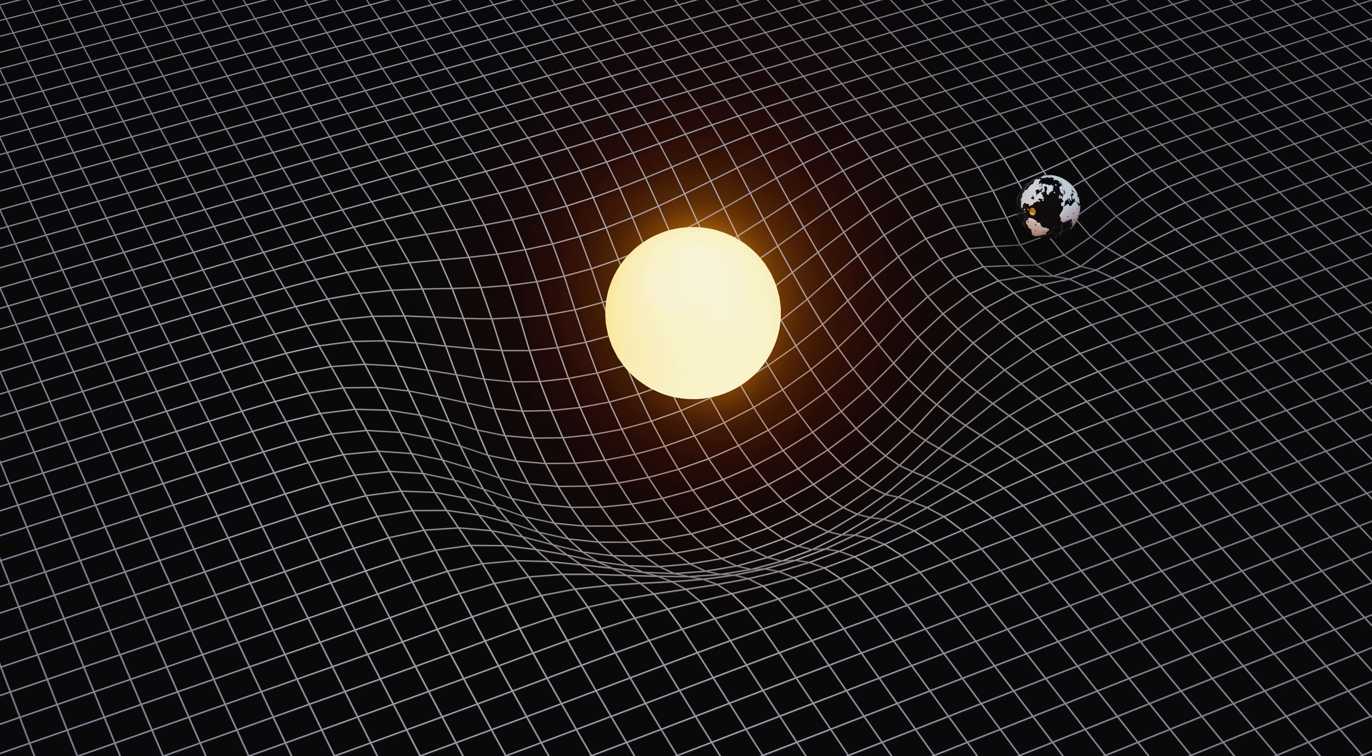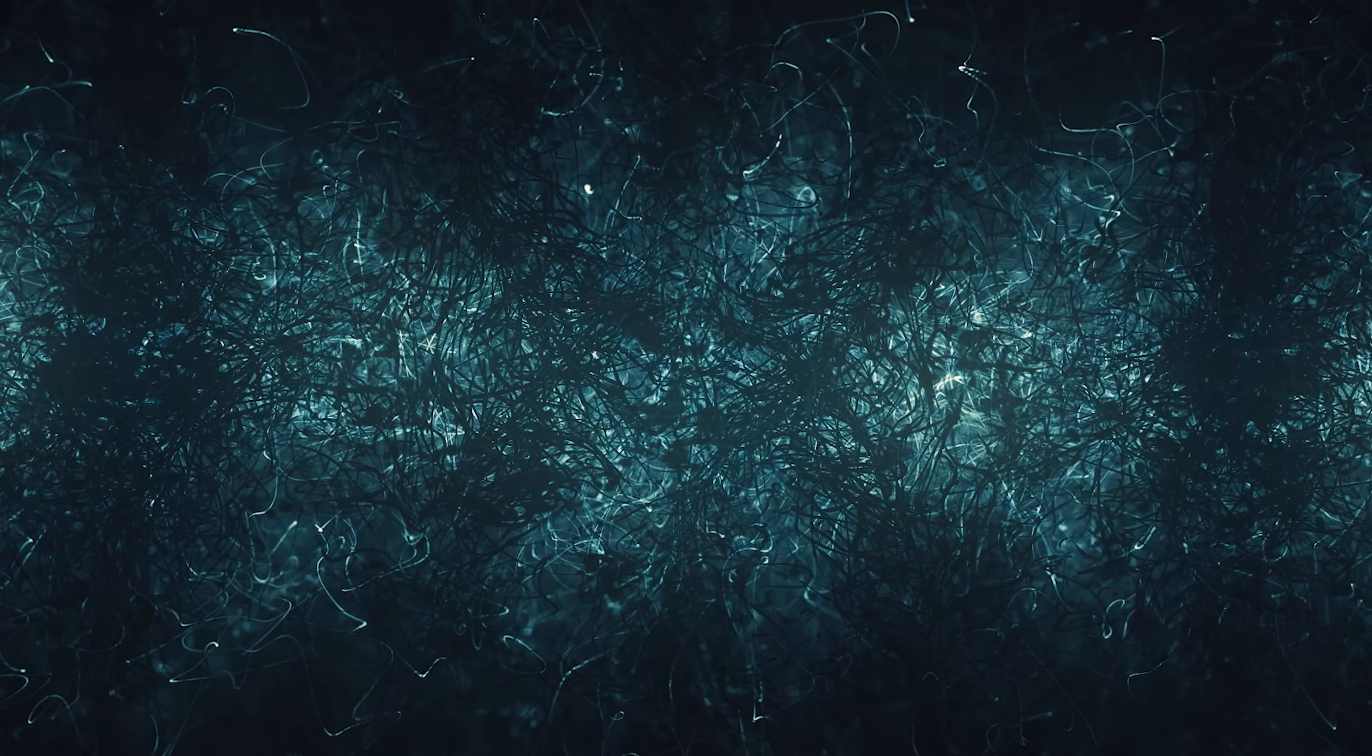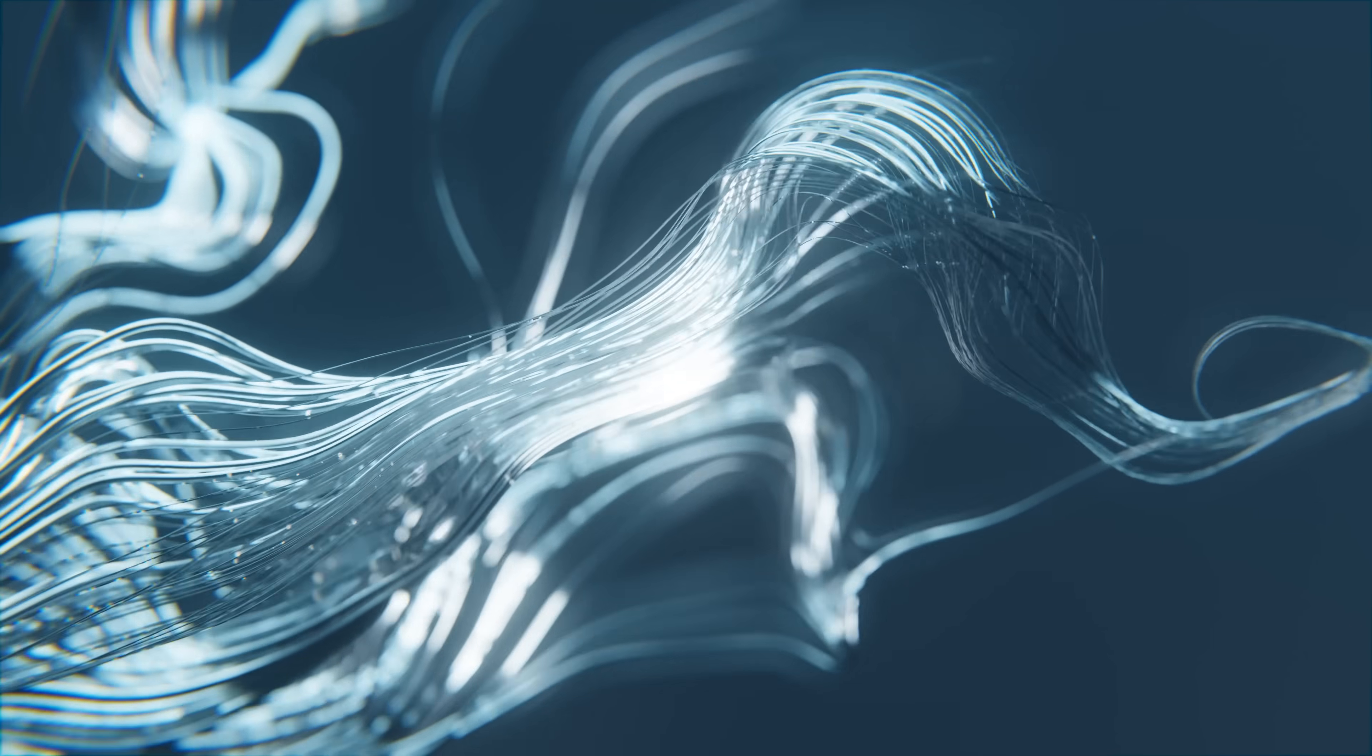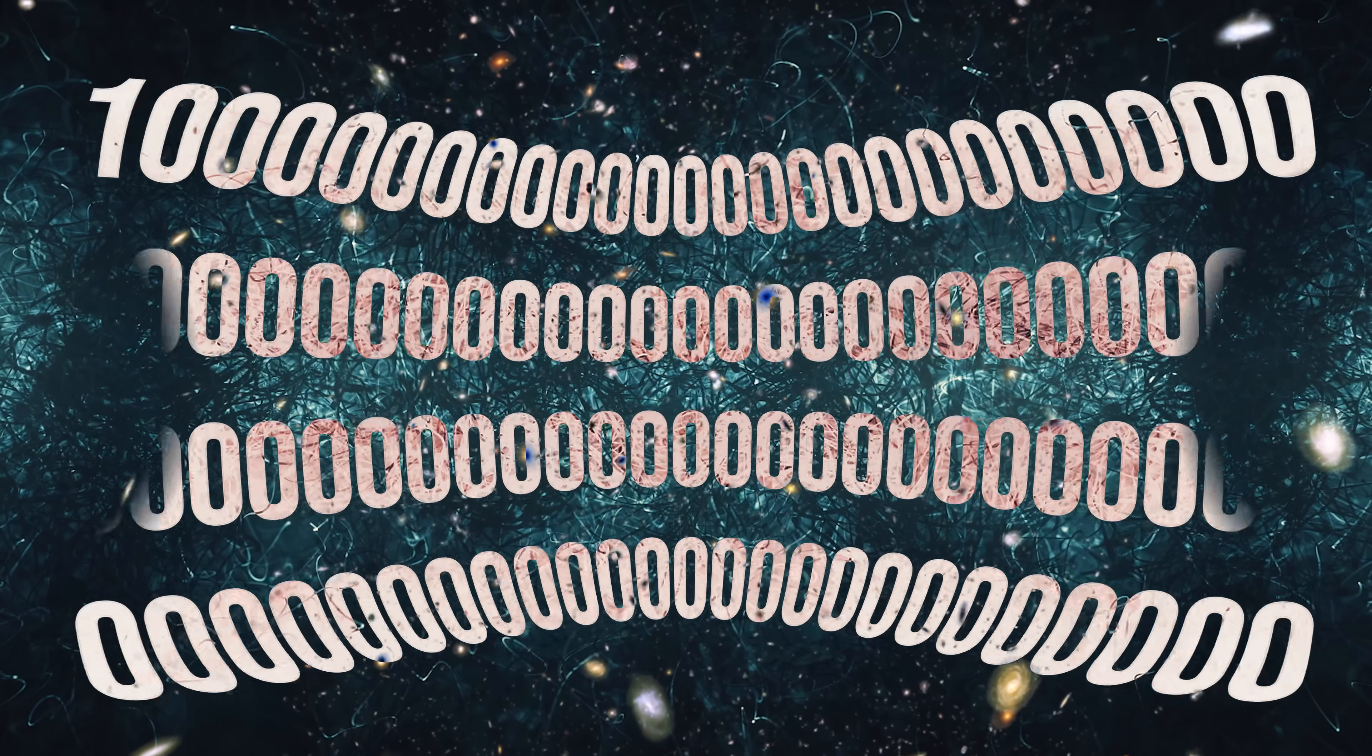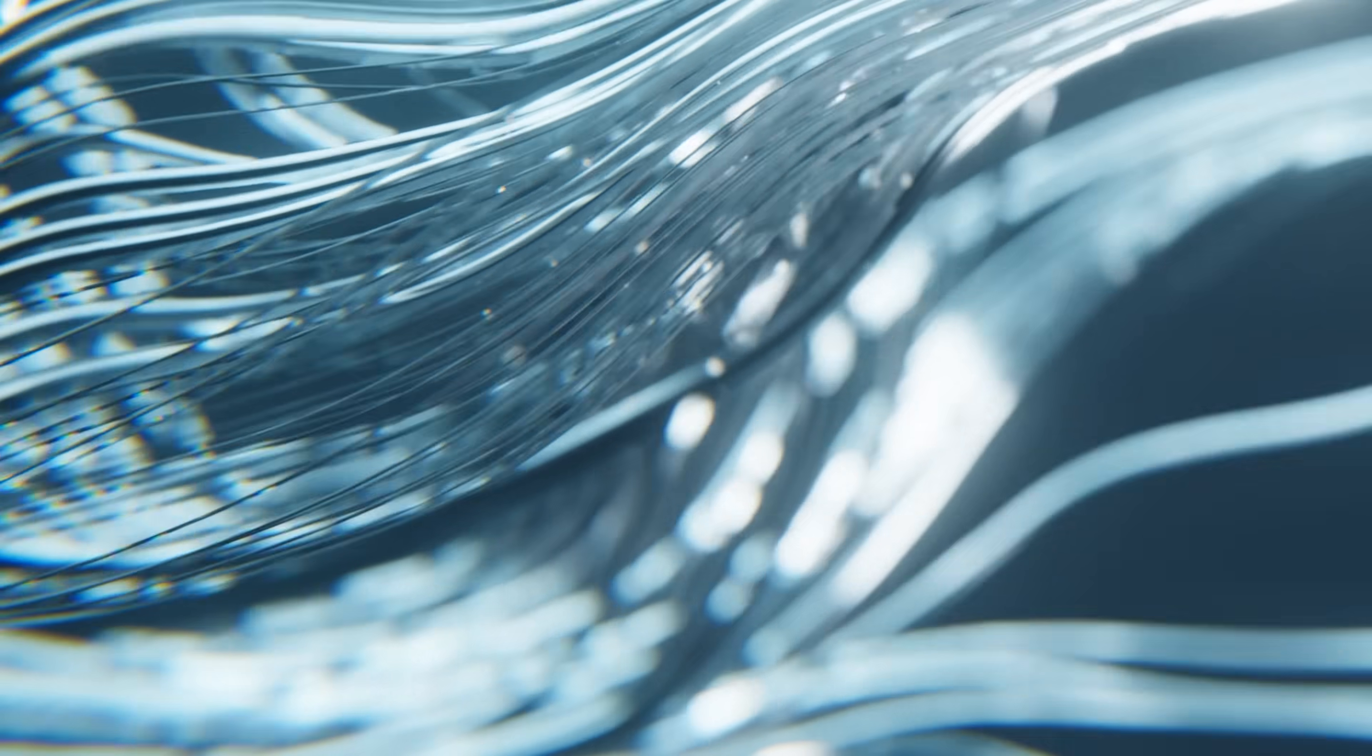According to Einstein's general theory of relativity, the fabric of space is impeccably smooth. Loop quantum gravity says otherwise. Imagine zooming in on space with the universe's most powerful microscope. According to loop quantum gravity, we would see that, like your bedsheet earlier, space is actually made of a series of tiny stitches. These minuscule stitches are the loops that give the theory its name, and we are talking really small. There would be more stitches in a cubic centimeter of space than there are cubic centimeters of space in the entire observable universe. A staggering 1,000 trillion, trillion, trillion, trillion, trillion, trillion, trillion. That's one followed by 99 zeros.